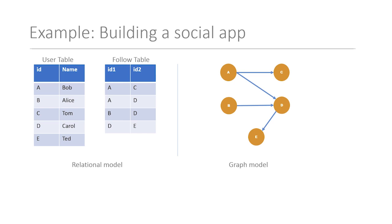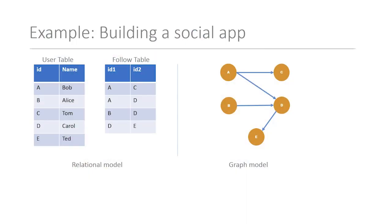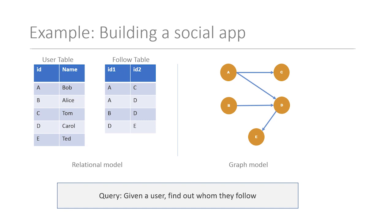We have an example right here in this slide. The application we're building is a social application where users can follow one another. The same application could be modeled using a relational model as well as a graph model. In the relational world, this can be done using two tables: a user table and a follow table. The user table contains information about users and the follow table contains the mapping of who follows whom.